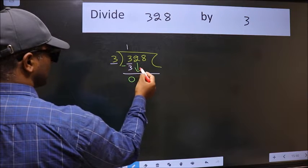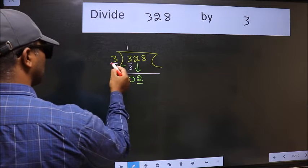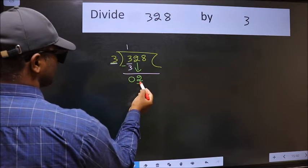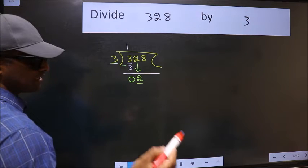After this, bring down the next number. So 2 down. Now here we have 2 and here 3. 2 is smaller than 3, so we should bring down the second number.